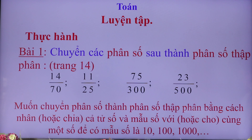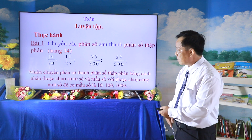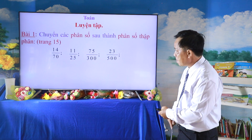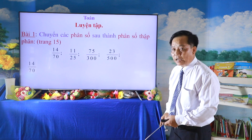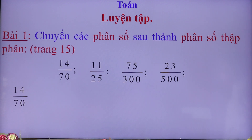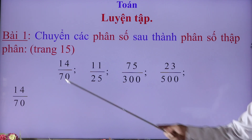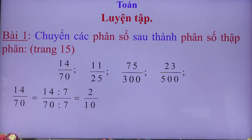Các em làm trong vòng 2 phút. Phân số 14/70: muốn chuyển thành phân số thập phân, mẫu số là 70, ta thực hiện phép chia cho 7. Mẫu số chia cho 7 thì tử số phải chia cho 7. 14 chia 7 được 2, 70 chia 7 được 10. Ta được 2/10. Bài thứ 2: 11/25, ta nhân với 4 để được mẫu số 100. Mẫu số nhân với 4 thì tử số phải nhân với 4. Kết quả là 44/100.